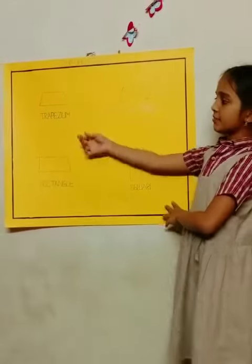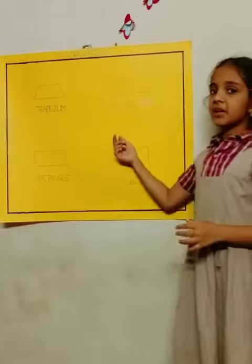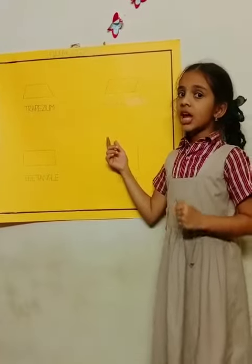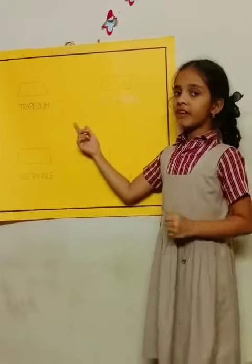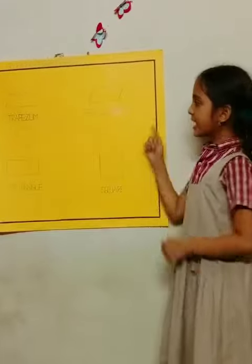So first one is trapezium. A trapezium is a quadrilateral in which only one pair of opposite sides are parallel.